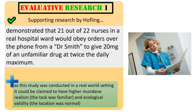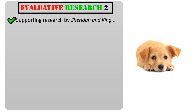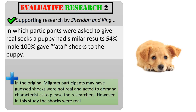We might say that Hoffling's research is quite good because it was conducted in a real world setting and we can claim the task had higher mundane realism — the task was quite realistic for the nurses, as nurses do have to give medicine out on a day-to-day basis, in a way that Milgram's study did not. We can also say that Hoffling's study had high ecological validity, as the setting the nurses were in — a hospital ward — was normal for them. So Hoffling's research backs up Milgram's research but has higher validity, making it more likely to be true.